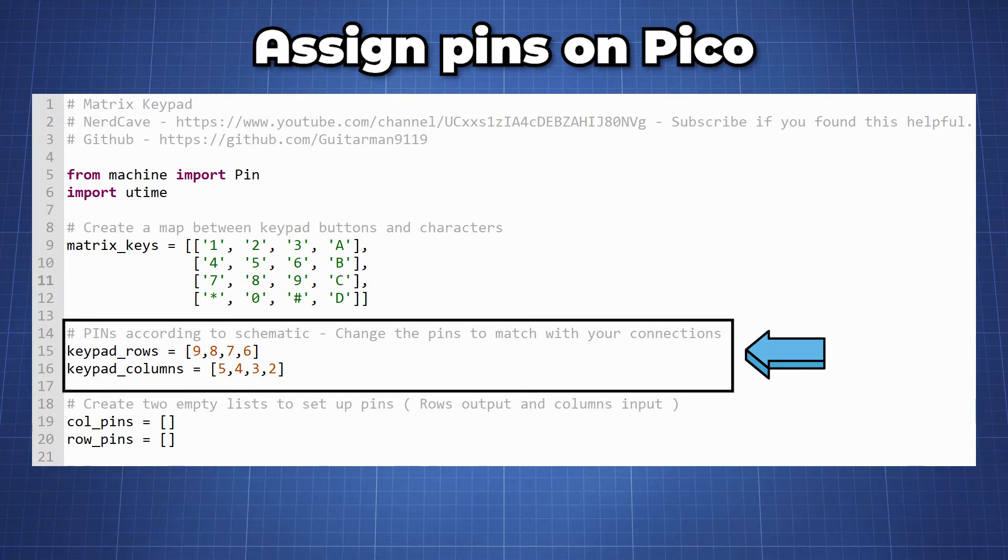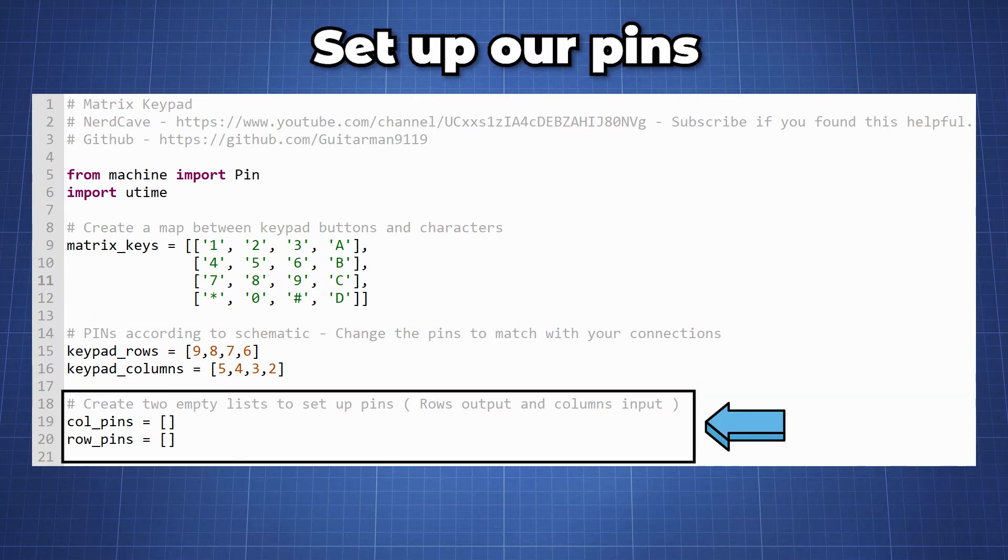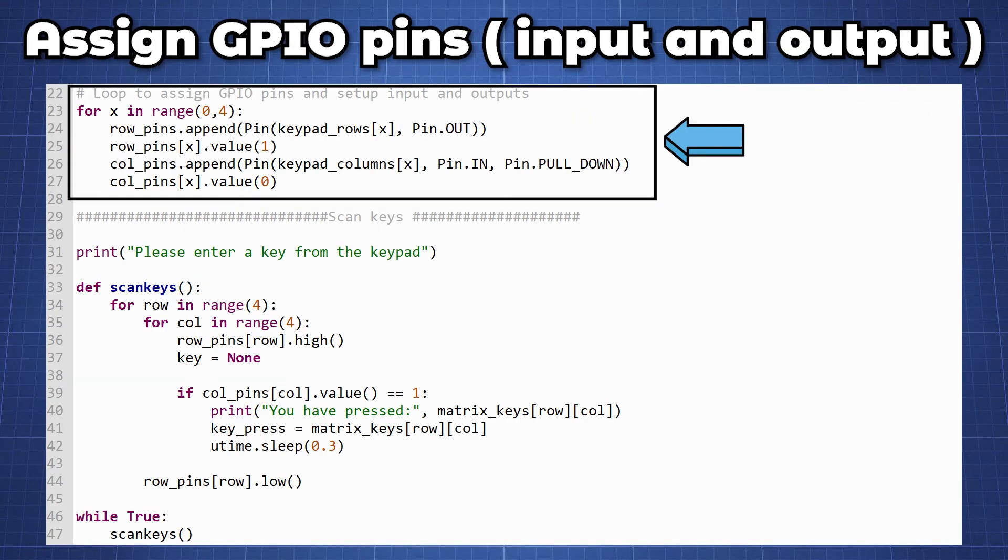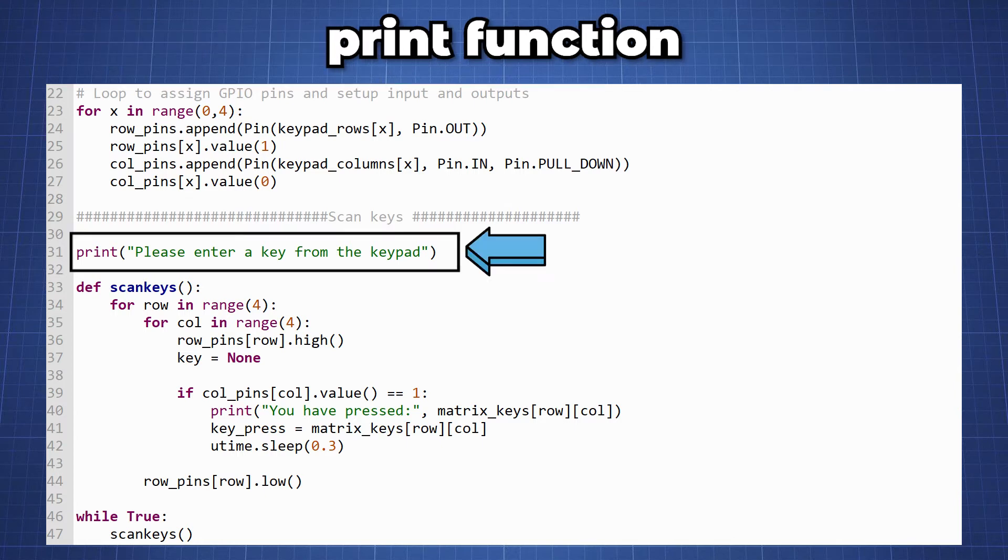Now we can assign the pins on the Pico so according to our schematic the row pins will be from 9 to 6 and our columns it will be pins from 5 to 2. We then need to set up our pins and we do this by creating 2 empty lists for the column pins and the row pins. We then use a for loop here to assign the pins according to the correct rows and make the pins an output using the pin.out and set it to 1. For the columns we do the same assigning the correct pins to our list and setting it up as an input to detect a button being pushed and a default value is set to 0. I then made a print function here to show the start of our program and it will ask us to enter a key from the keypad.